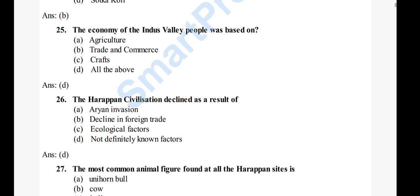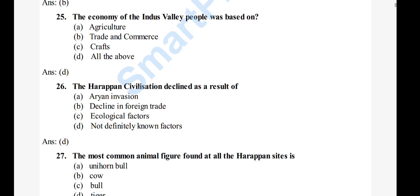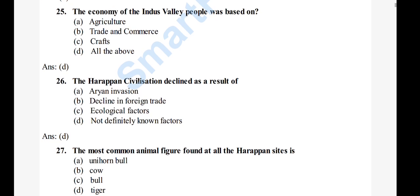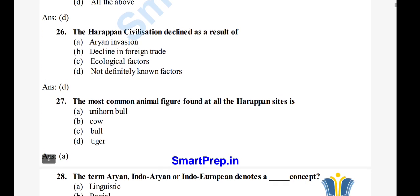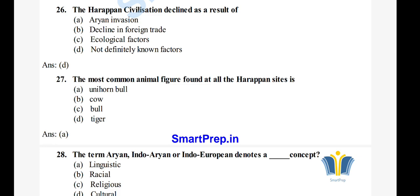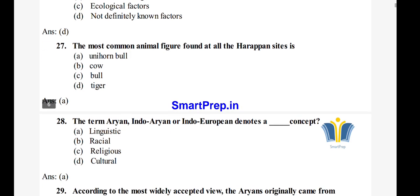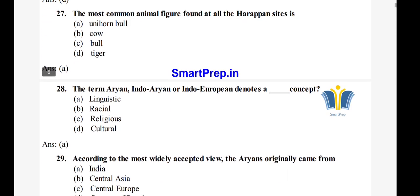Question 27: The most common animal figure found at the Harappan site. Question 28: The term Aryan, Indo-Aryan, or Indo-European denotes a linguistic concept. The right answer is option A, linguistic concept.